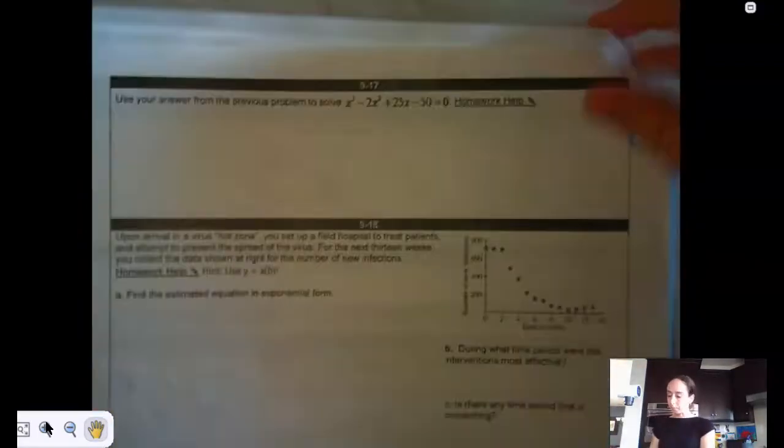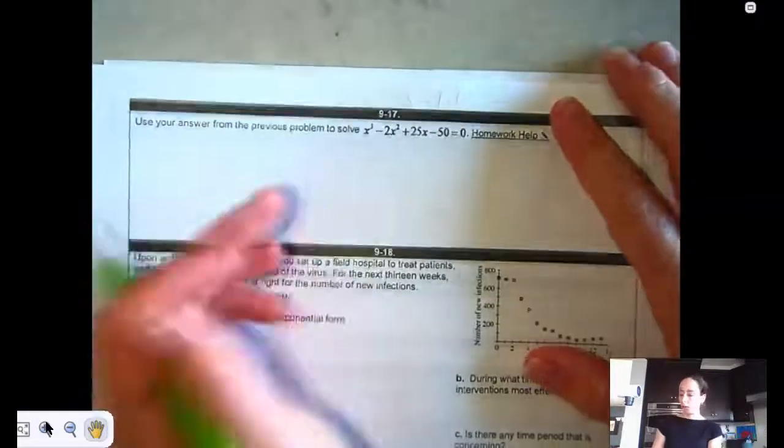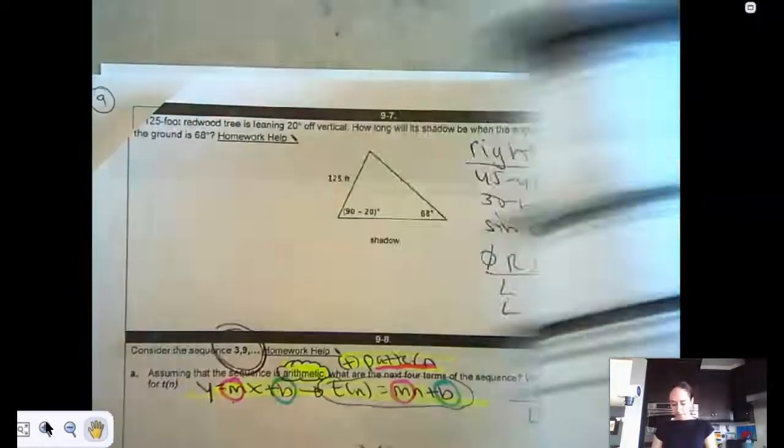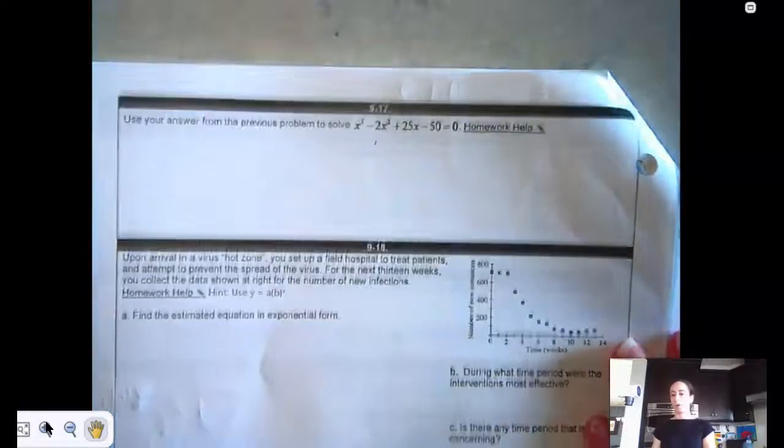The next page, this one's saying now find all the zeros. And I think it's the exact same problem. So it gave you one of the zeros. Maybe you'll get the other ones and be good to go.